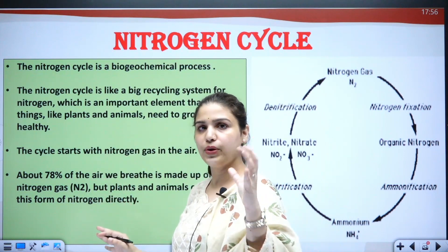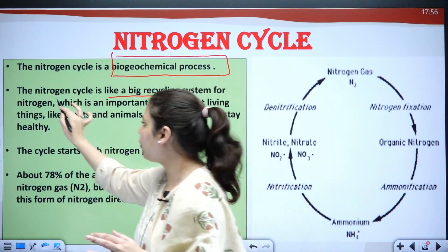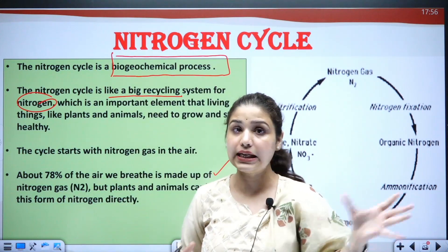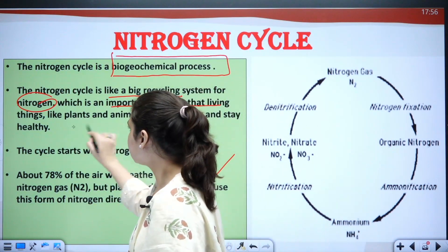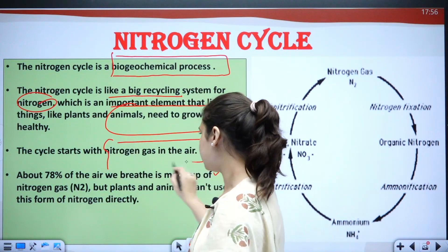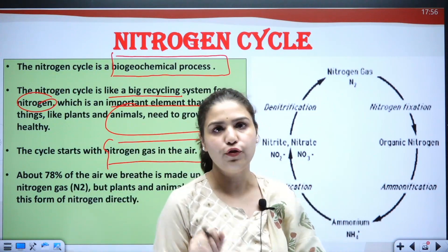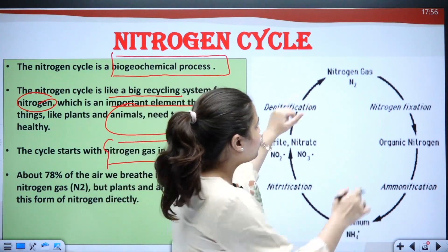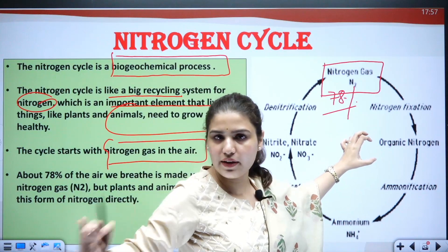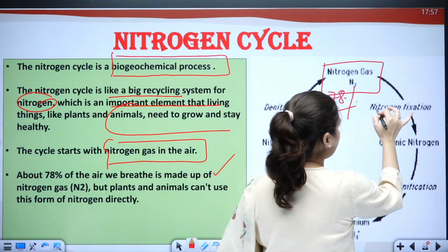Nitrogen is a vital component required by both plants and animals. It is a vital component of amino acids, used in chlorophyll and other molecules, and it is a key element of nucleic acids — DNA and RNA. DNA contains all our genetic information. Despite nitrogen being present in abundance, we can't use it directly. The nitrogen cycle is a biogeochemical process — a big recycling system for nitrogen that changes its form to make it usable.